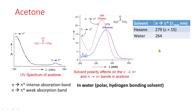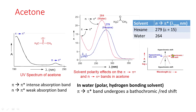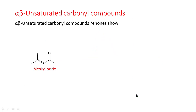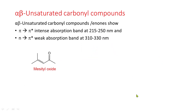In water, a polar hydrogen bonding solvent, the pi-to-pi-star band undergoes bathochromic shift, whereas the n-to-pi-star band shows hypsochromic shift.